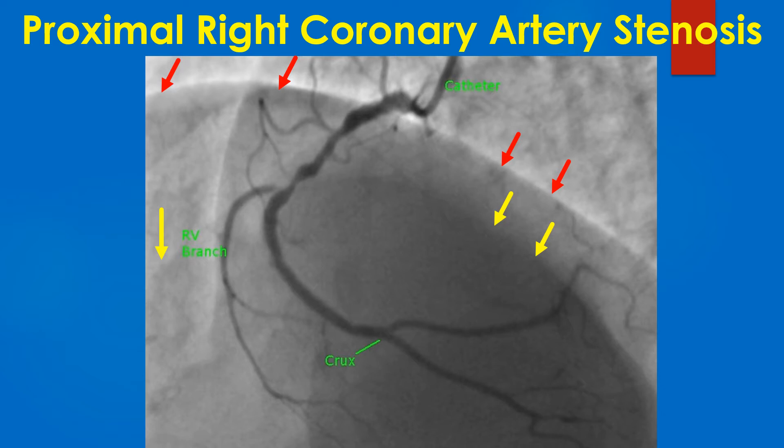The outline of left and right domes of the diaphragm are seen in the background in this cranial view, marked by red and yellow arrows. It is common to see the contour of the diaphragm in all cranial views of coronary angiograms.